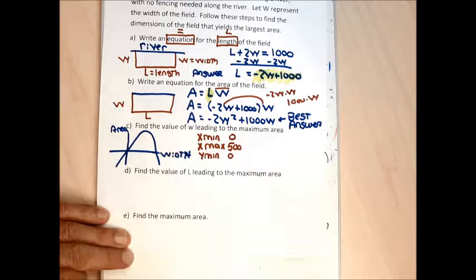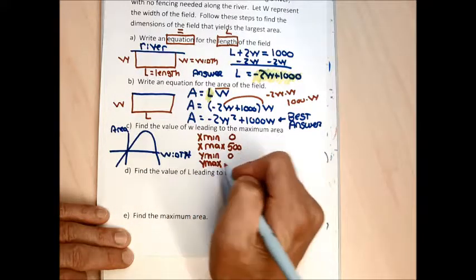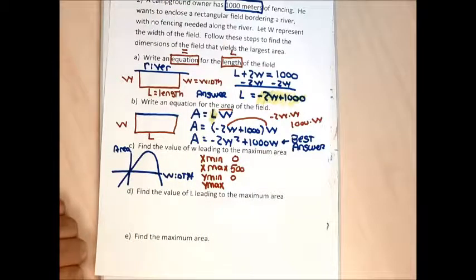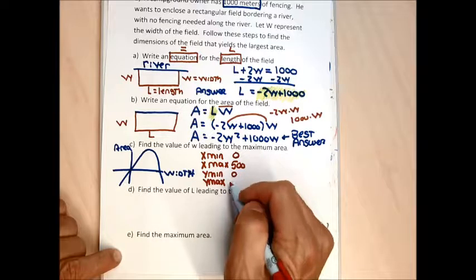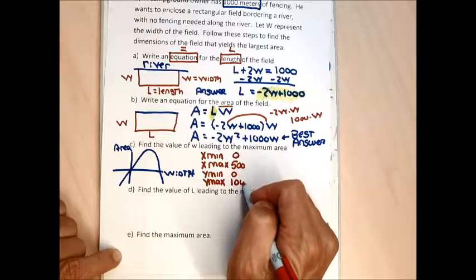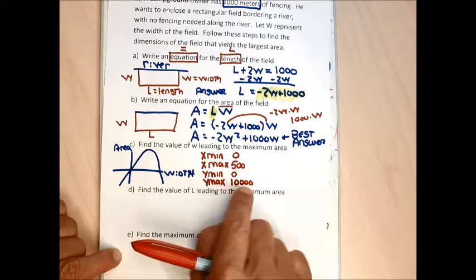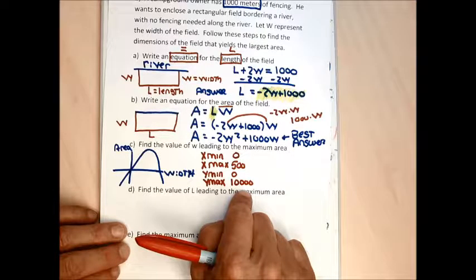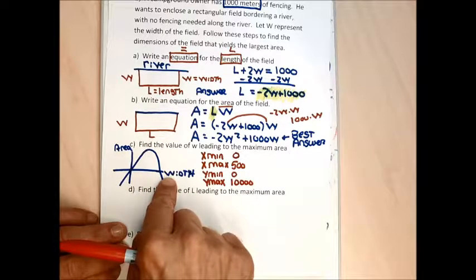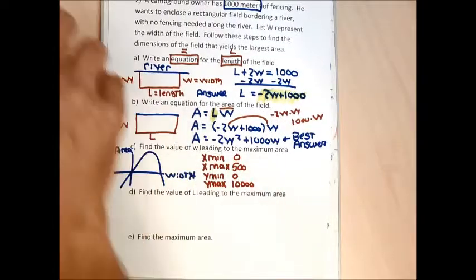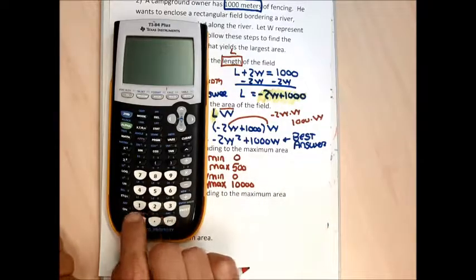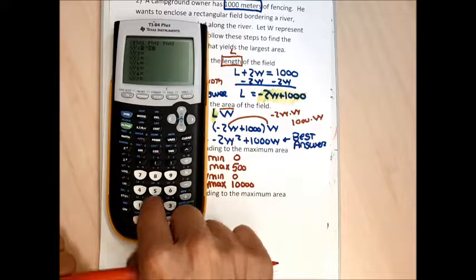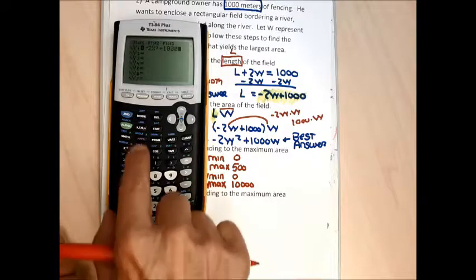I don't have a good feel for the y-max, so I start with a big number like 10,000. When I graph it, I can barely see any of the parabola — it goes way off the screen. I check the table values and see y's of 15,000 and 36,800. I'm already at 65,000 as I scroll through, so I change y-max to 100,000. That's still not enough, so I bump it to 150,000, and now I can see the whole parabola.